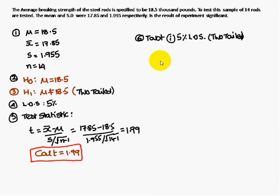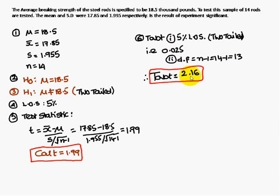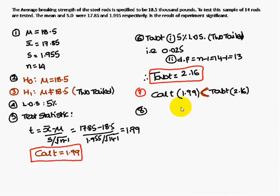The tabulated t for 5% level of significance with a two-tail test means we use 0.025 significance (0.05 divided by 2). The degrees of freedom is n minus 1, that is 14 minus 1 equals 13. For 13 degrees of freedom at 0.025 significance, the tabulated t value is 2.16. Since the calculated t (1.19) is less than the tabulated t (2.16), H-naught is accepted.